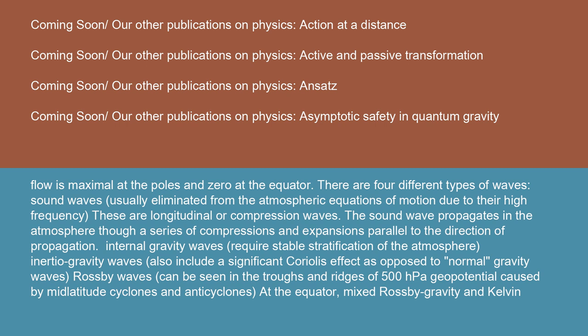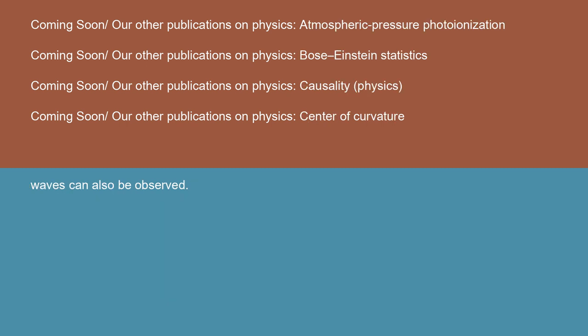Internal gravity waves require stable stratification of the atmosphere. Inertio-gravity waves also include a significant Coriolis effect, as opposed to normal gravity waves. Rossby waves can be seen in the troughs and ridges of 500 hPa geopotential caused by mid-latitude cyclones and anticyclones. At the equator, mixed Rossby-gravity and Kelvin waves can also be observed.